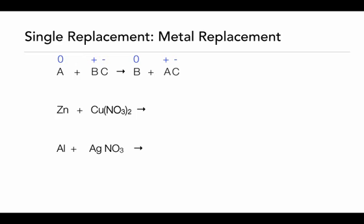Let's apply this pattern to these two reactions below. In the first reaction, it's zinc reacting with copper 2 nitrate. In this reaction, the zinc and the copper are going to trade places — zinc will replace the copper. Zinc starts off with a zero oxidation state, the copper has a 2 plus oxidation state, and the nitrate anion is 1 negative. We place copper by itself since it's going to be replaced by the zinc, and zinc will go with the nitrate. Because zinc forms a 2 plus oxidation state, we still have a subscript 2 on the nitrate. The oxidation state for copper becomes zero, zinc is now 2 plus, and the nitrate stays at 1 negative.